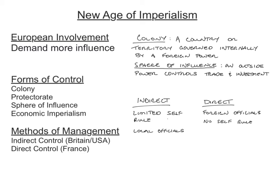They also used different types of management. Indirect control was limited self-rule using local officials — the idea was to train local people how to rule, and this was used a lot by Great Britain and the United States in the Pacific. Direct control used foreign officials — France was famous for this, bringing in French officials to rule in colonies or territories with no self-rule. The goal of direct control was assimilation: getting the local colony or people to assimilate into the foreign power's style of government or culture.